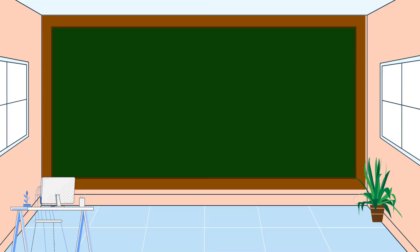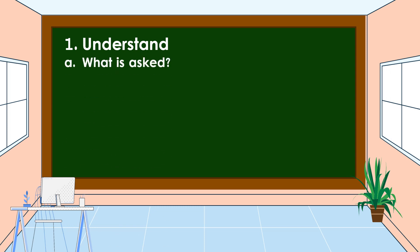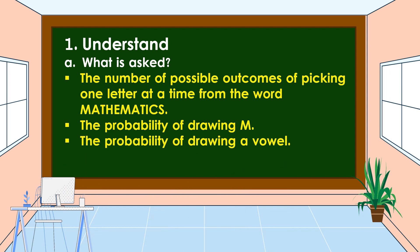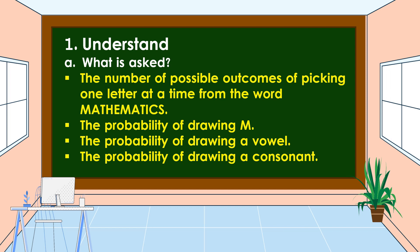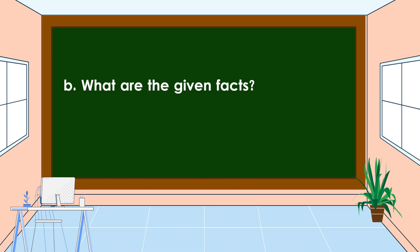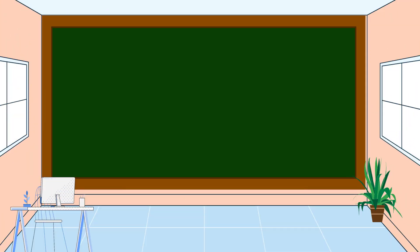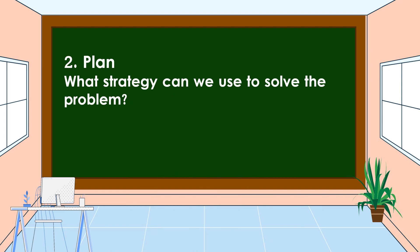We are going to solve the problem using the four-step plan. First, we understand the problem — we should know what is asked. What is asked is the number of possible outcomes of picking one letter at a time from the word mathematics, the probability of drawing M, the probability of drawing a vowel, and the probability of drawing a consonant. The given facts are the letters of the word mathematics put in the box.